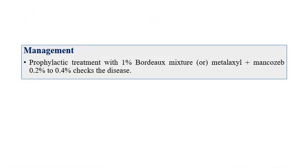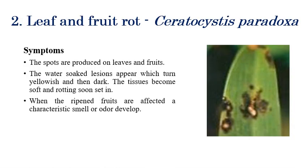For management of heart rot, prophylactic treatment with one percent Bordeaux mixture, or a metalaxyl plus mancozeb combination at 0.24 percent or 0.4 percent, can effectively manage this disease.